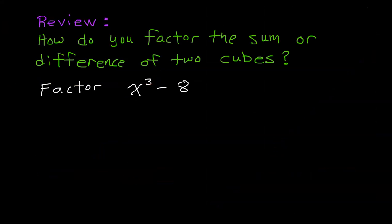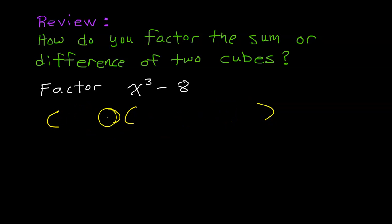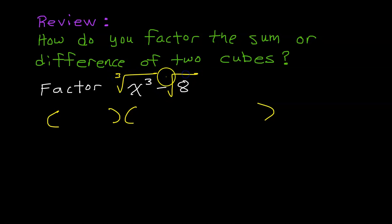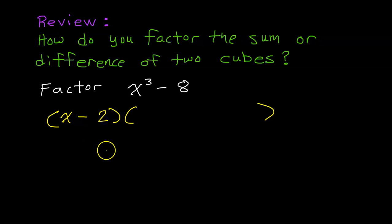Before the next example, let's do a quick review of how we factor the sum or difference of two cubes. It always factors as a binomial times a trinomial — two terms and then three terms. The binomial comes from taking the cube root of both terms. So the cube root of x cubed is x, and the cube root of 8 is 2, giving us the binomial x minus 2.